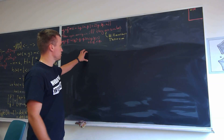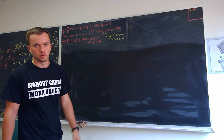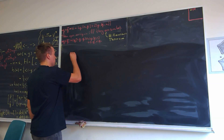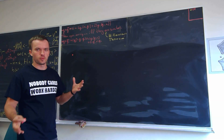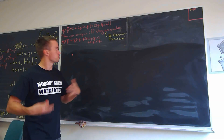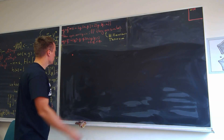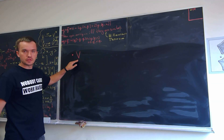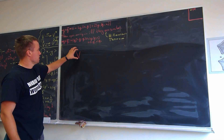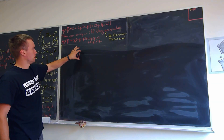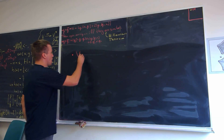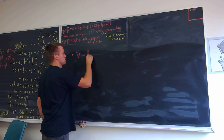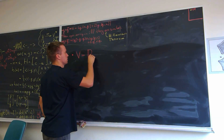Hello guys, so in this video I want to talk about dual vector spaces. I didn't prepare for this video so I'm going to just talk about them. So let's start with the regular vector space. Instead of talking about an abstract vector space V, I'm going to take a concrete vector space which is R to the N.